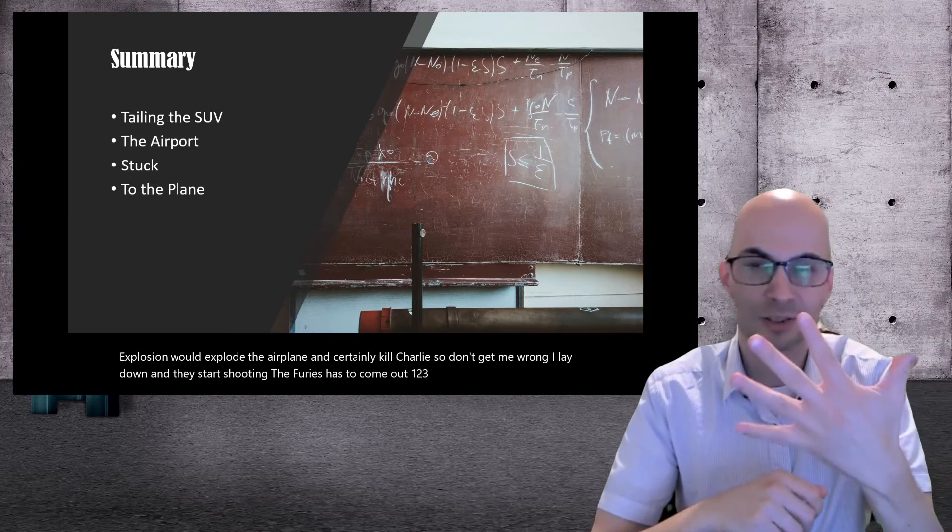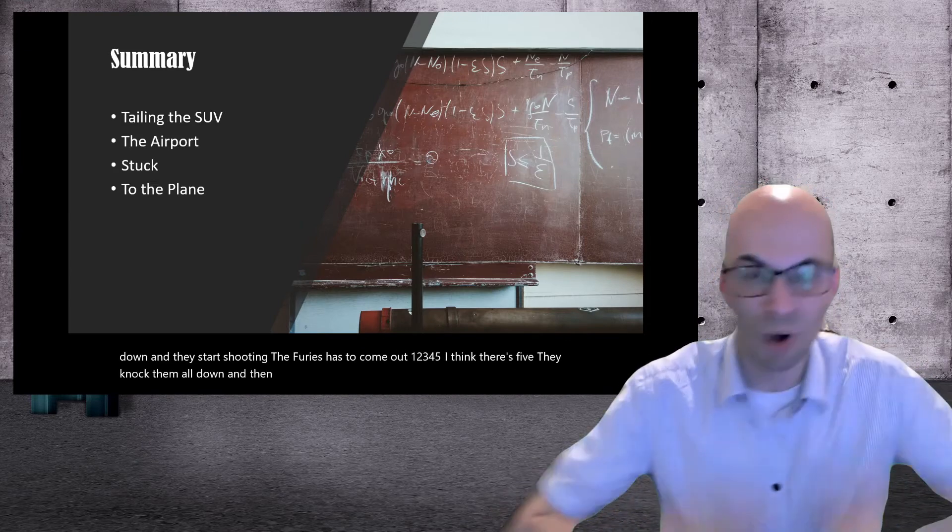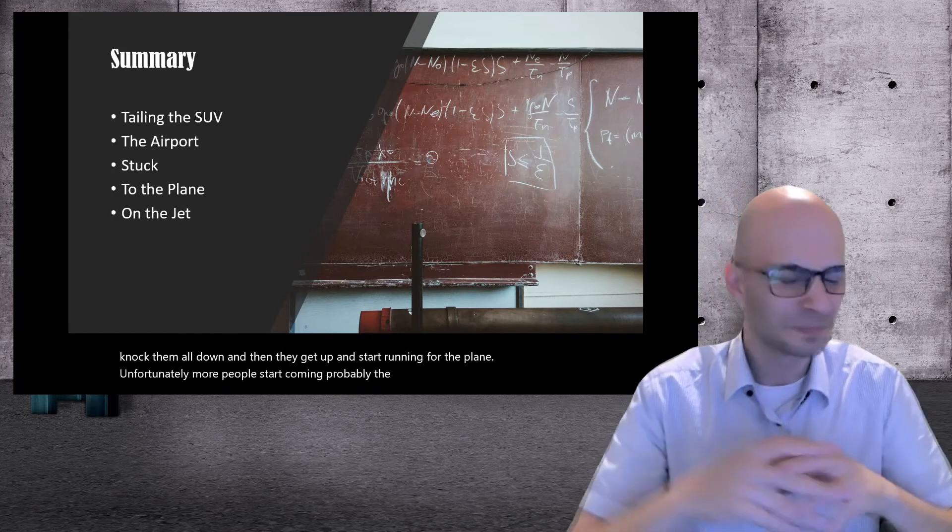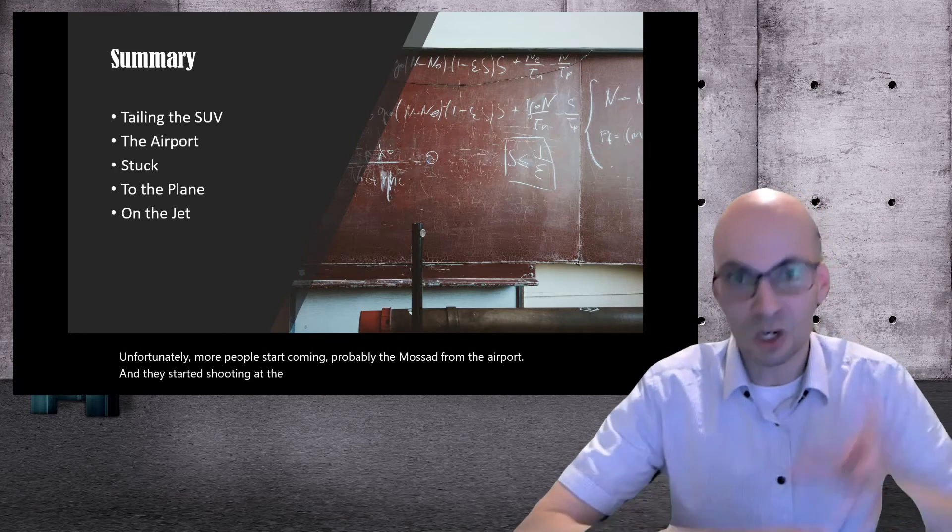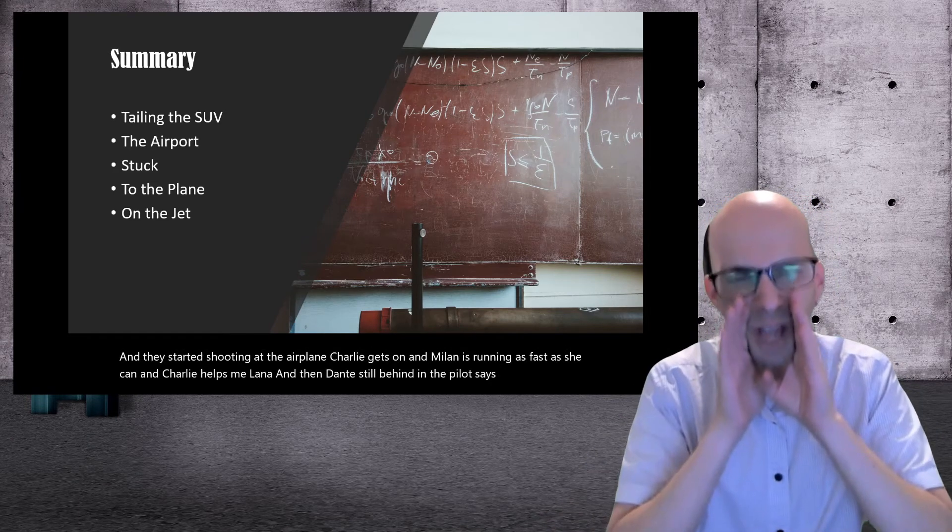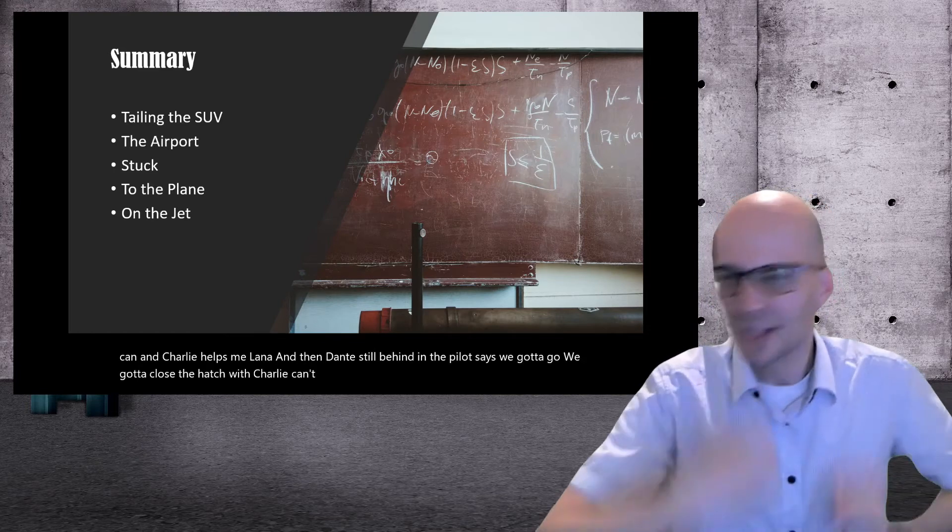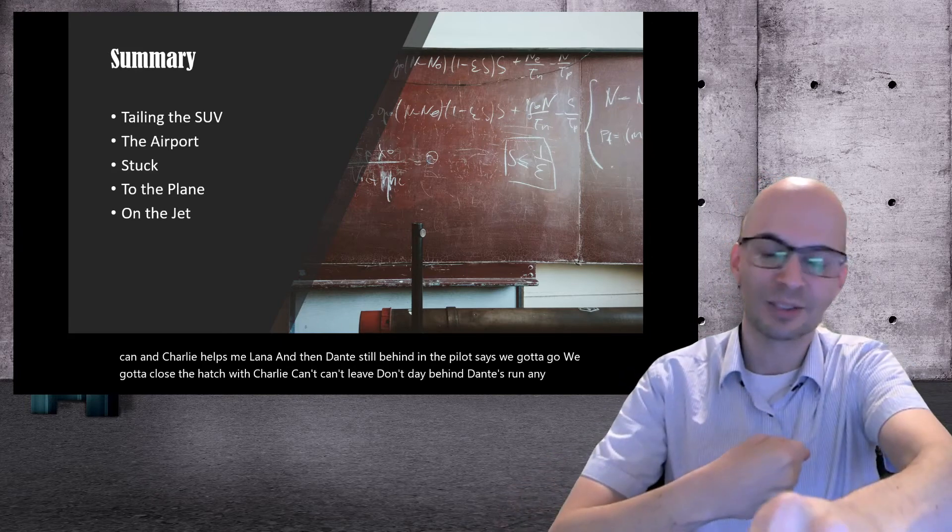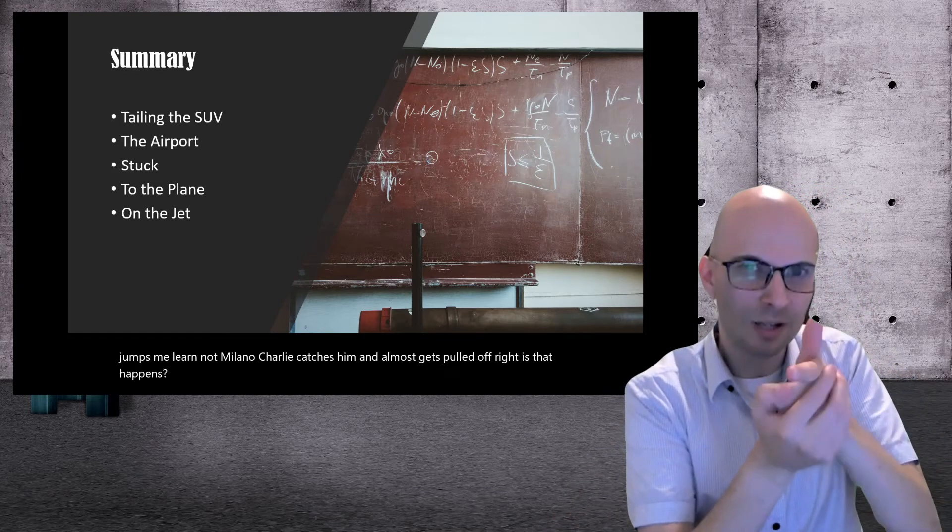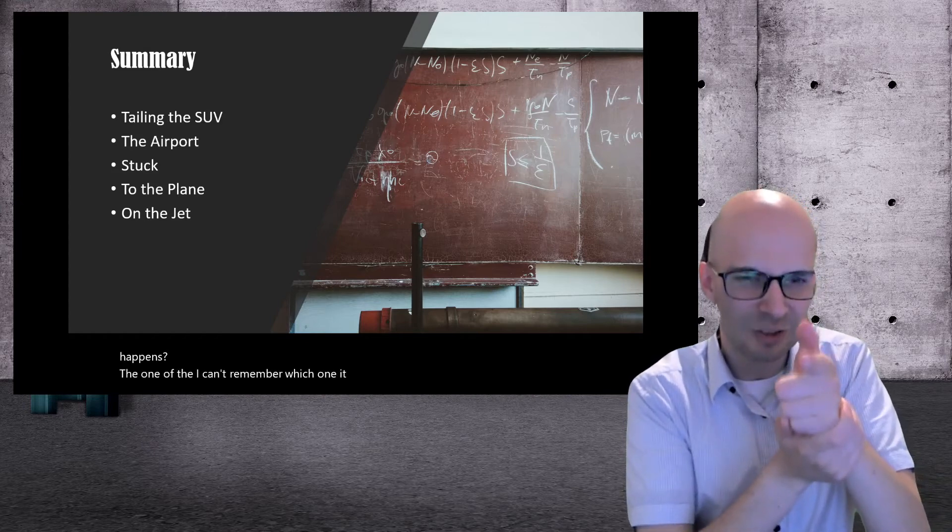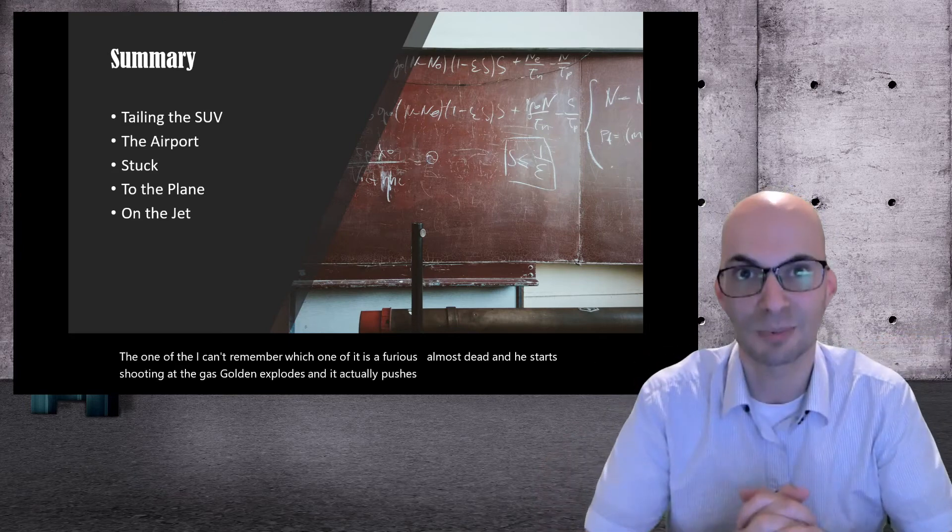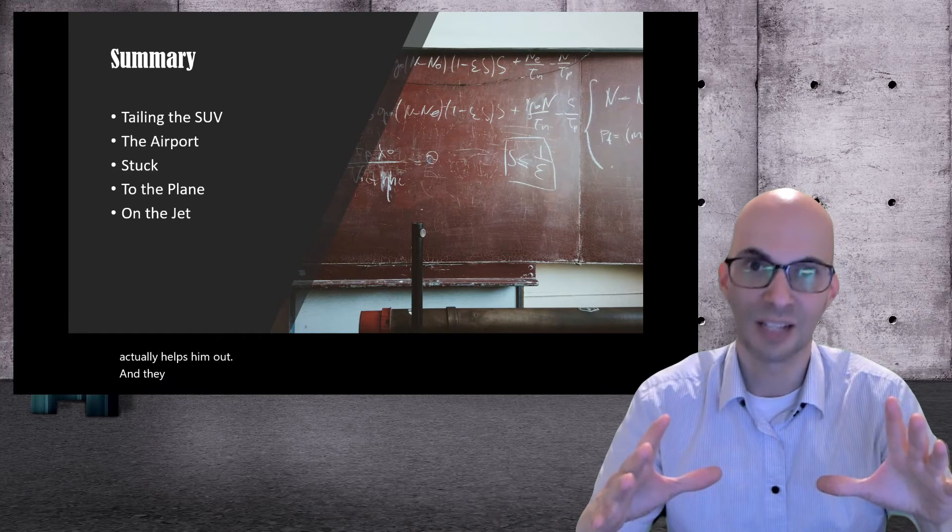So Dante and Milana lay down and they start shooting the Furies as they come out. One, two, three, four, five. I think there's five. They knock them all down and then they get up and start running for the plane. Unfortunately, more people start coming, probably the Mossad from the airport and they start shooting at the airplane. Charlie gets on and Milana is running as fast as she can and Charlie helps Milana. And then Dante is still behind and the pilot says, we gotta go, we gotta close the hatch. But Charlie can't leave Dante behind. Dante's running and he jumps. Milana, not Milana, Charlie catches him and almost gets pulled off. Right as that happens, one of the Furies, he is almost dead and he starts shooting at the gas. Boom. It explodes and it actually pushes Dante into the airplane. So it actually helps him out and they all get safely on the jet.